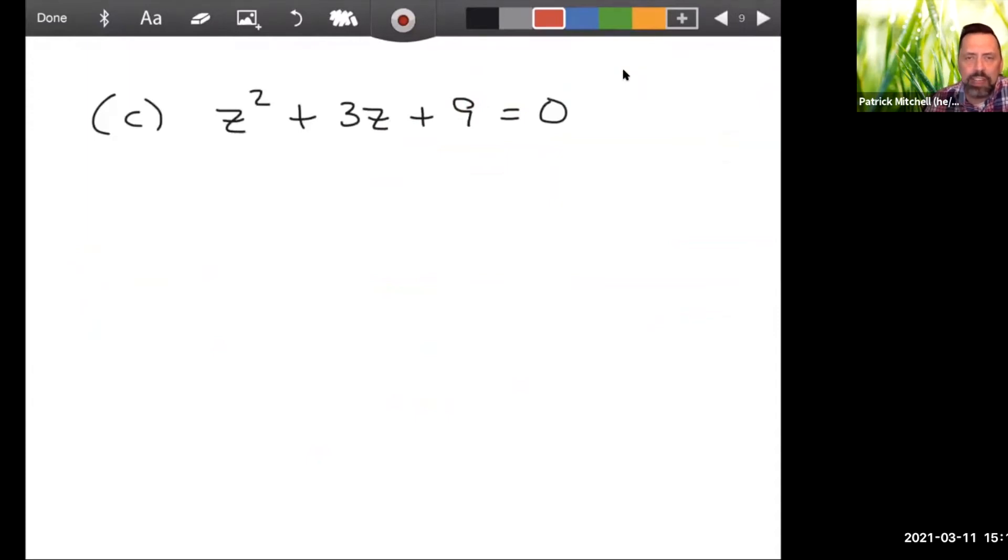Alright, next example: z squared plus 3z plus 9 equals zero. So this one looks pretty simple. First, we're going to subtract 9 on both sides. We always get that constant term by itself.